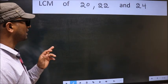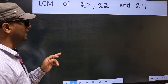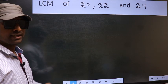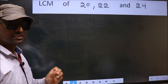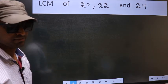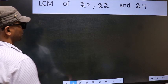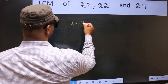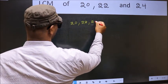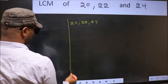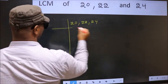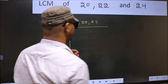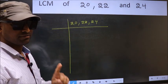LCM of 20, 22 and 24. To find the LCM, first we should frame it in this way: 20, 22, 24. This is your step 1.